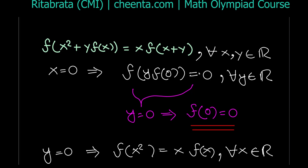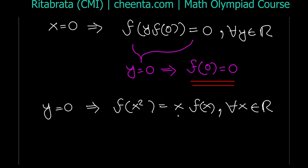From here we can guess that monomials like x or x² could satisfy this equation. Apart from that, if f is a constant function satisfying this equation, it must be identically zero — because if f ≡ c, then we get c = c·x for all real x, which forces c = 0.